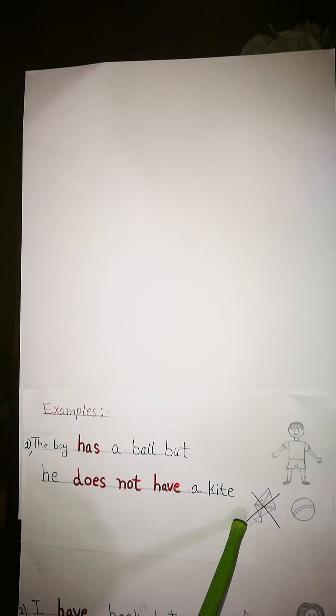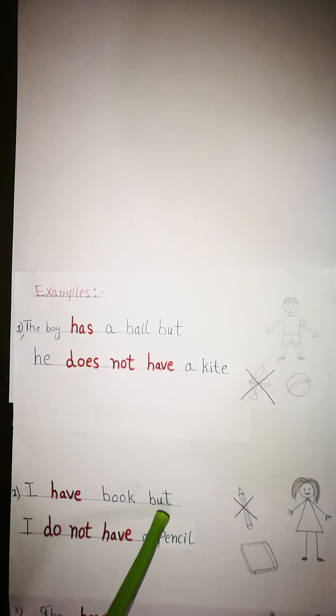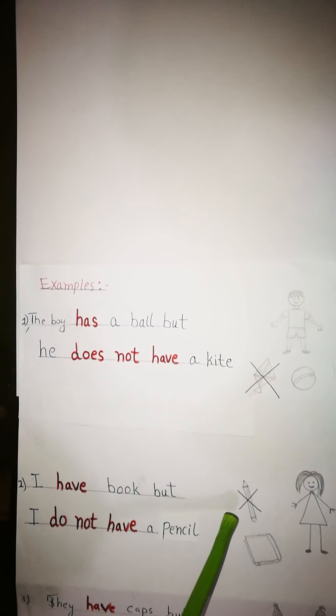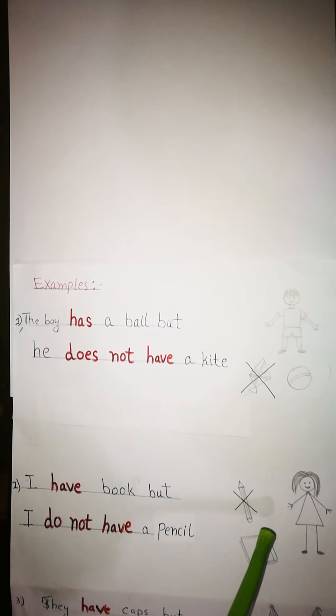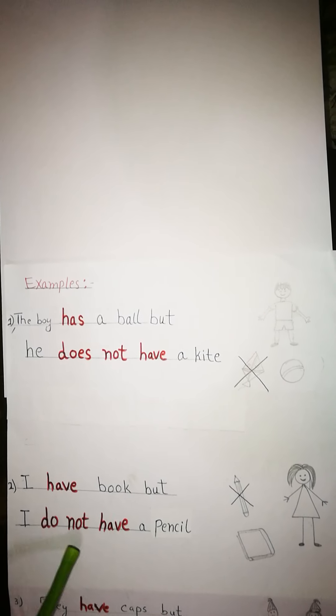Look at this picture. The boy has a ball, but he does not have a kite. In the second example, this is a girl and she's saying: I have a book, but I do not have a pencil. She does not have a pencil — she has a book, so she will say: I have a book but I do not have a pencil.